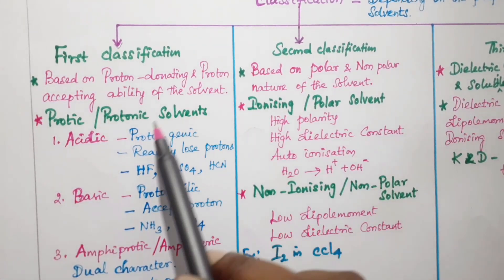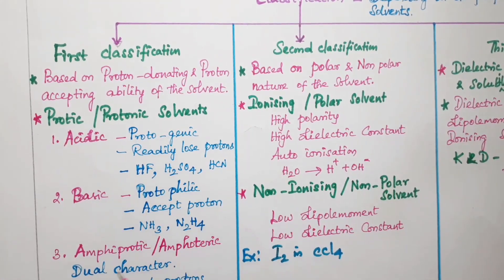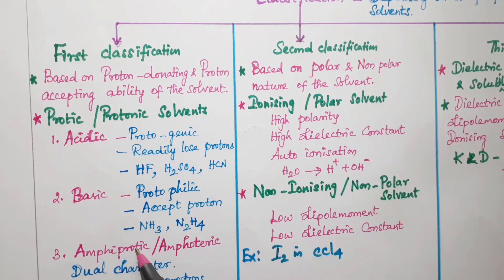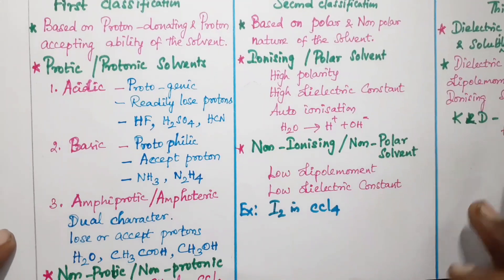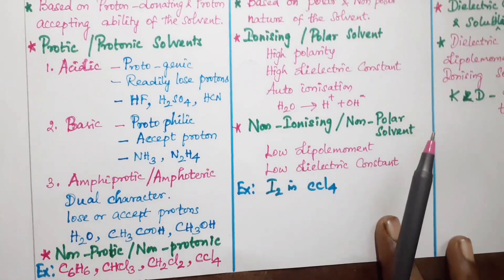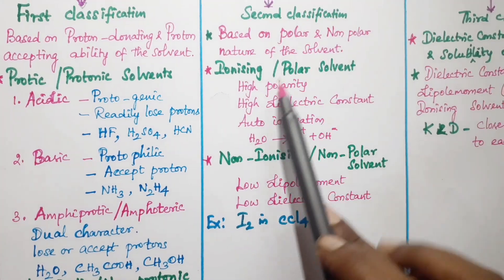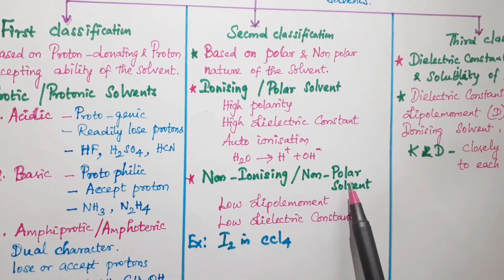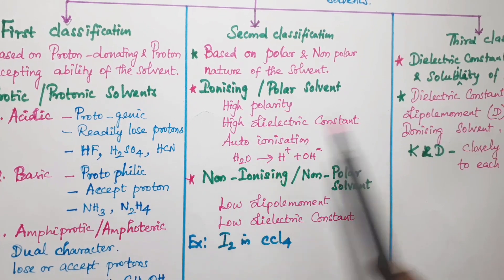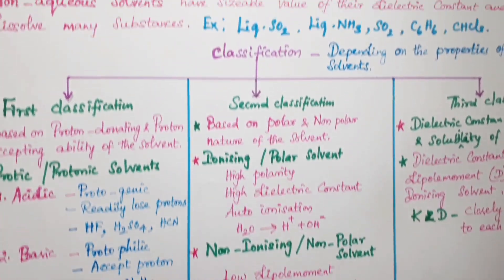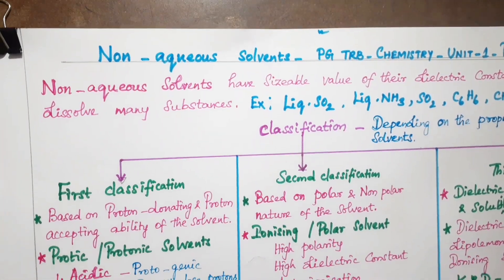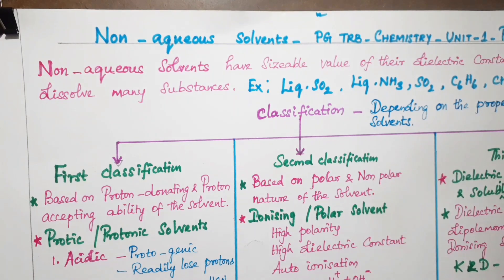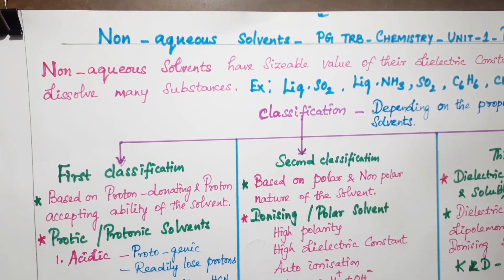In recap: the first classification covers proton-donating solvents — acidic, basic, and amphiprotic types. The second covers polar and non-polar solvents. Please subscribe and click the bell button. Thank you!